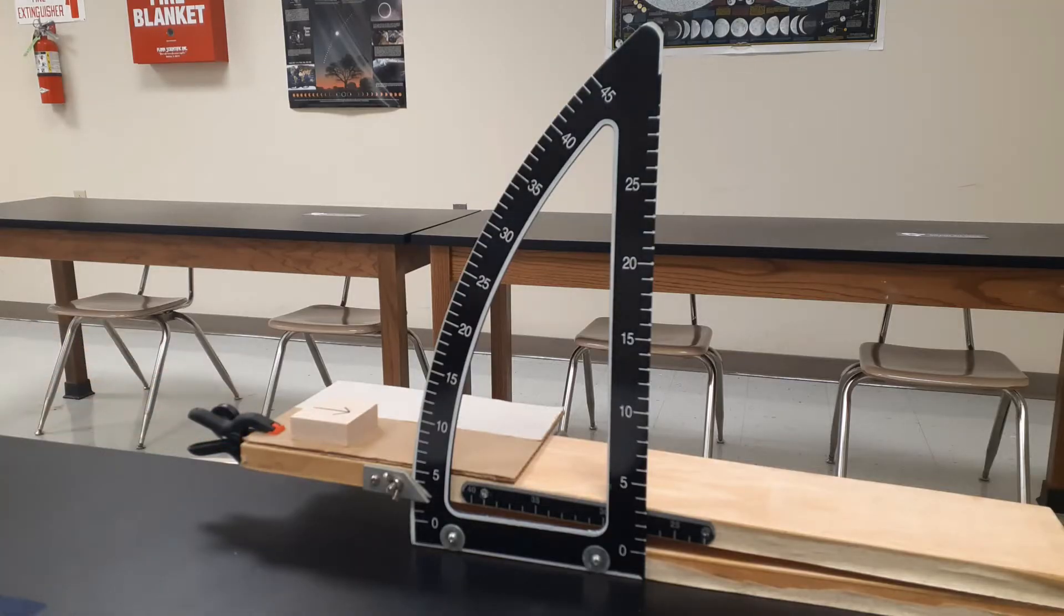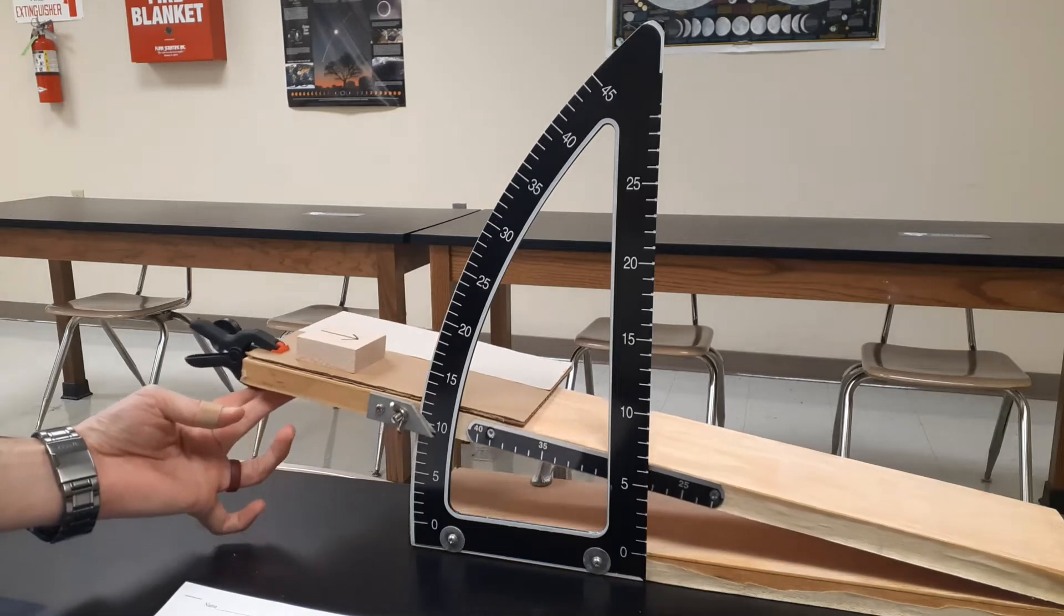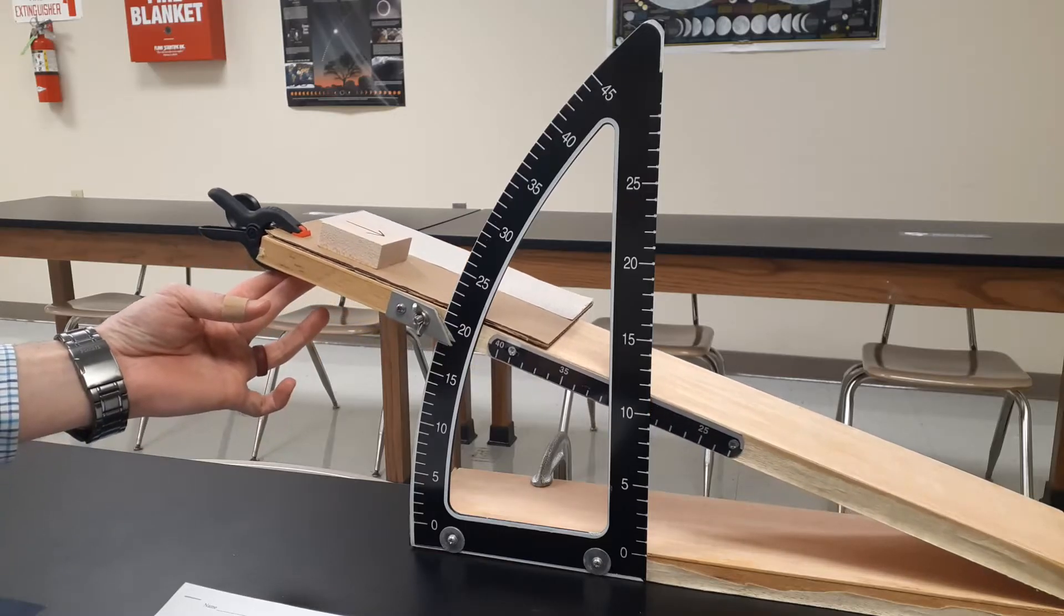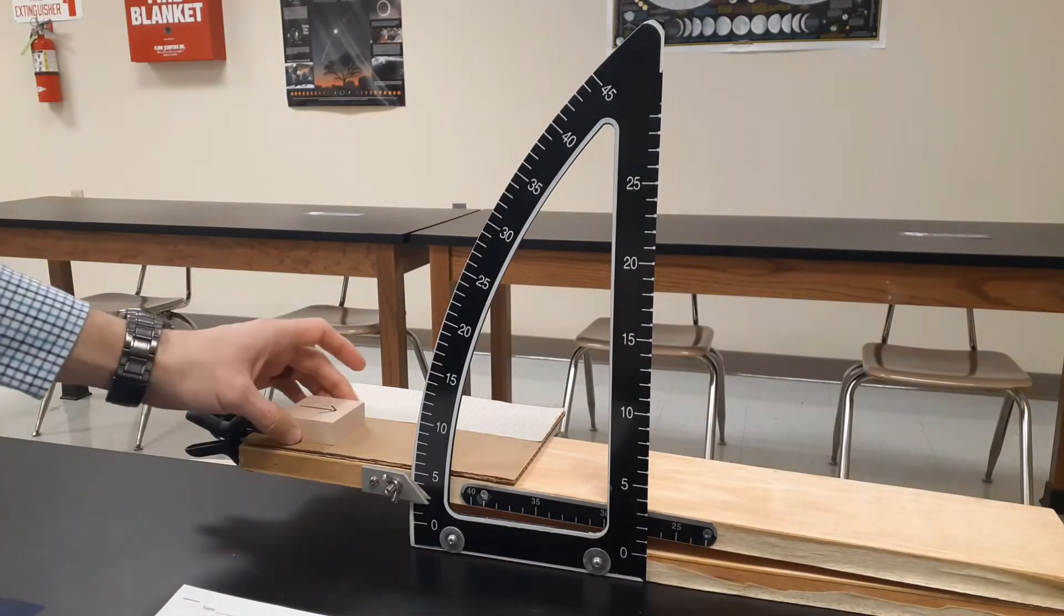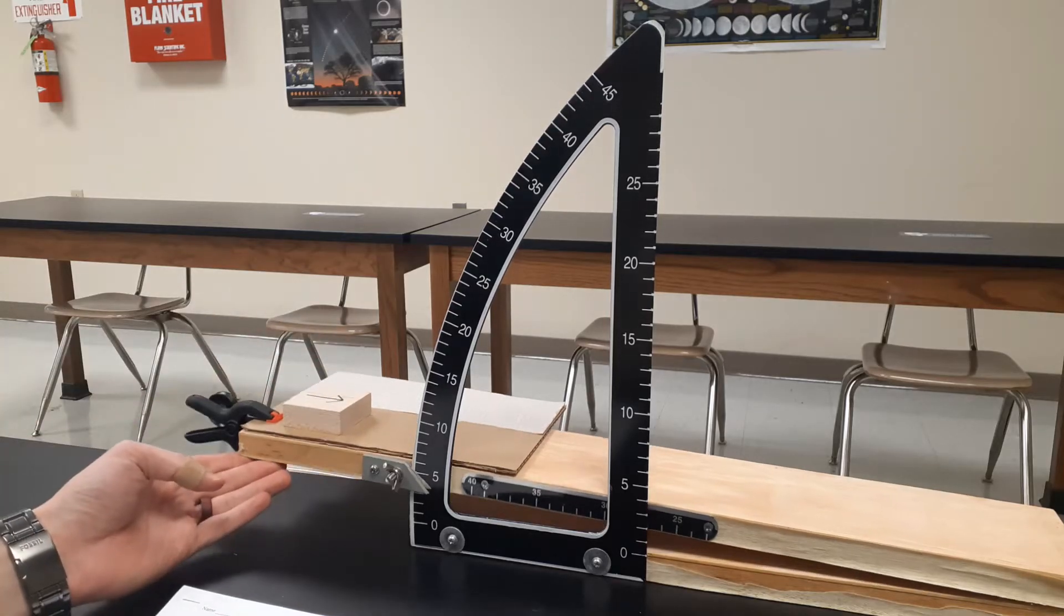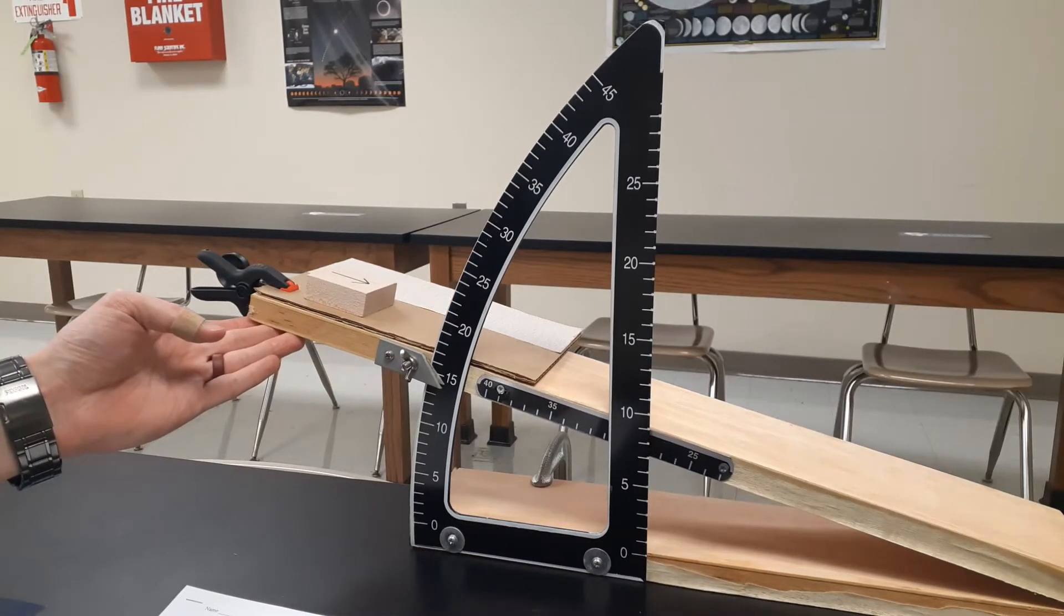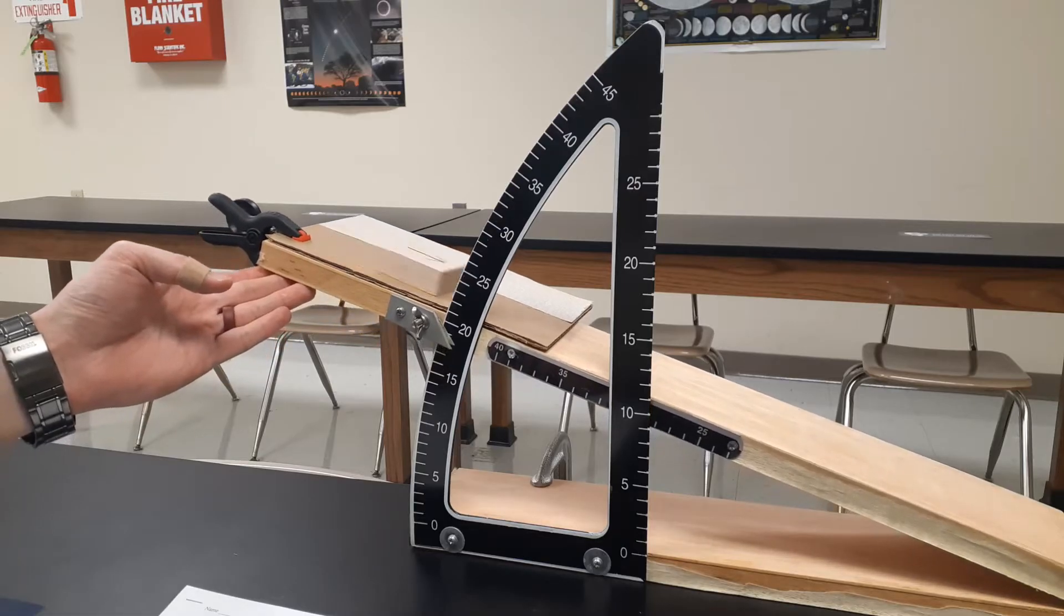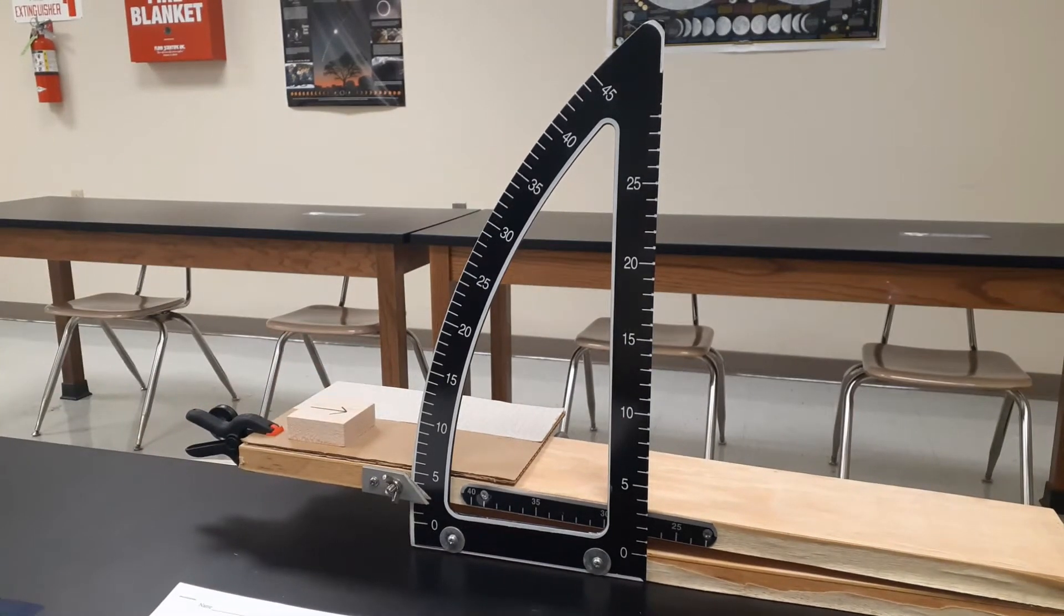We're working right now on the cardboard trial number one. I'm just gently raising this ramp up, and at some point this block is going to start to slide. I'm just slowly creeping my way up. Trial number one, the block slid at 19 degrees. So you put that down in your data table for trial one for cardboard. I'm going to gently raise this up again. Trial number two, that time it slid at 18 degrees.